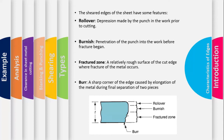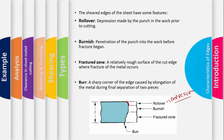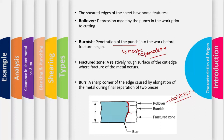Once the sheet is sheared, different regions appear on the sheared edge. The first is the rollover region, caused by the initial depression of the punch when it first contacts the material. Following that is the burnishing zone, where actual plastic deformation and penetration of the punch into the work occur before the fracture begins.